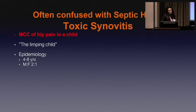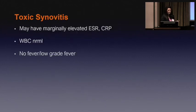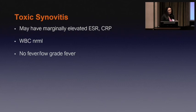Toxic synovitis is often confused with septic arthritis and is the most common cause of hip pain in a child — this is truly the limping child. Kids are usually a little bit older and have a more subacute presentation. Oftentimes you can get a history of a viral illness within the last couple of weeks. They usually will walk, just with a limp. The labs can be a little confusing — the white count's usually normal, but ESR and CRP may be slightly bumped, though not as high as with a true bacterial infection.